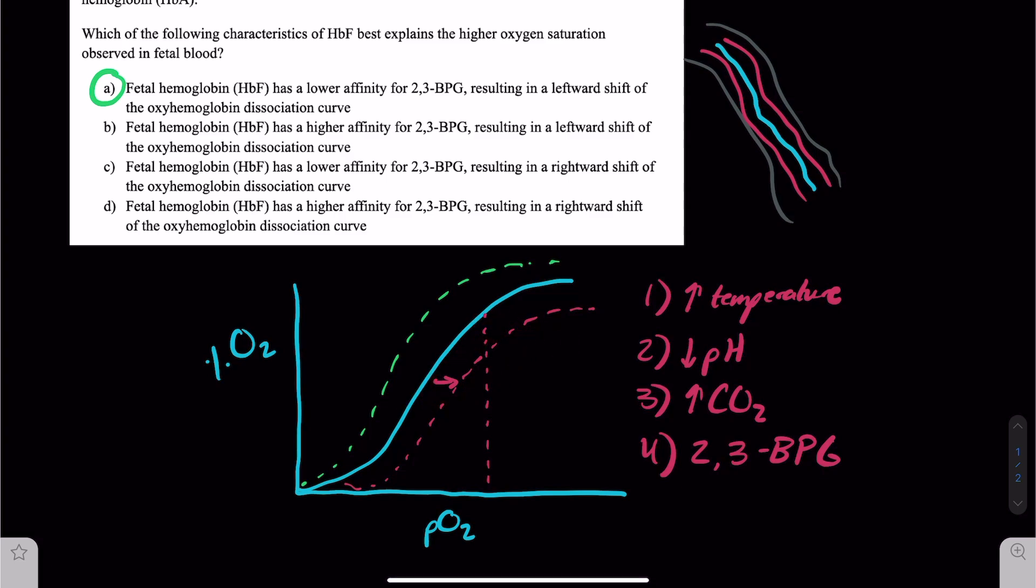So we can see that B is wrong. Fetal hemoglobin has a higher affinity for 2,3-BPG. Even without reading the question, we know this is wrong because if more 2,3-BPG was binding, this would result in a rightward shift. So B can't be correct.